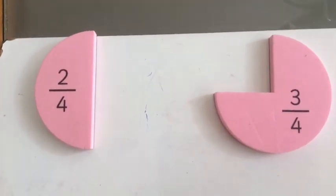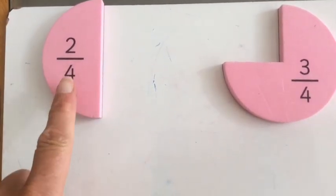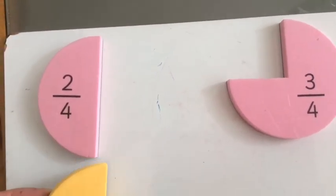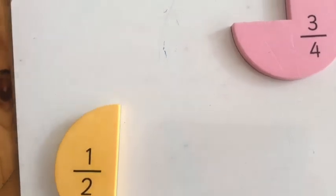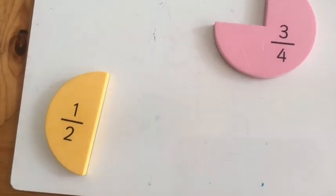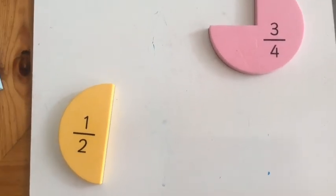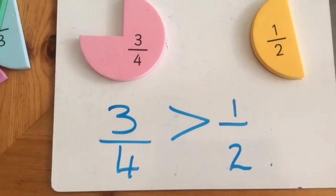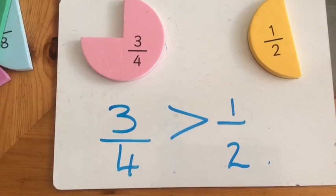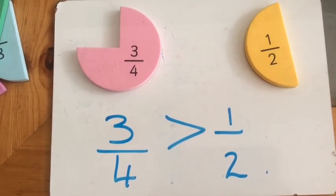Let's look at these fractions a little bit more closely now. If you remember, two quarters was the same as a half. So do you agree that three quarters is bigger than a half? Then we can record it like this. Three quarters, and there's your greater than sign. Three quarters is greater than a half.